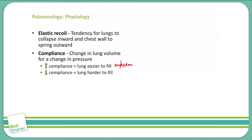Examples of diseases that decrease compliance in the lung include pulmonary fibrosis, pneumonia, acute respiratory distress syndrome, and pulmonary edema.